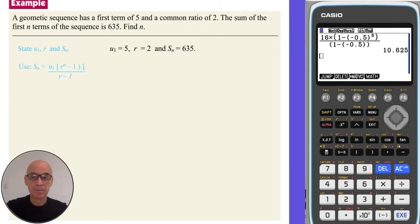And then if we write down the formula for the sum of n terms, this time I'm using the first version since r is bigger than 1. But either version will work. And substitute the values into the equation. So replacing u1 with 5 and r with 2, as shown.